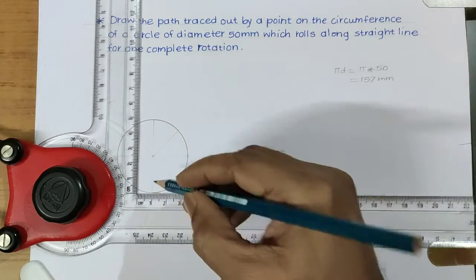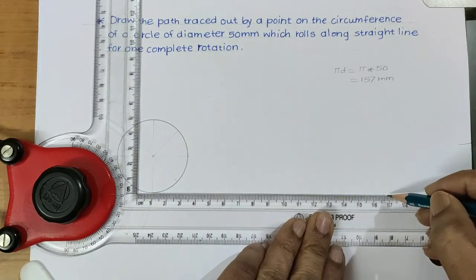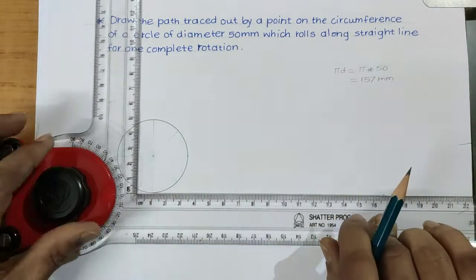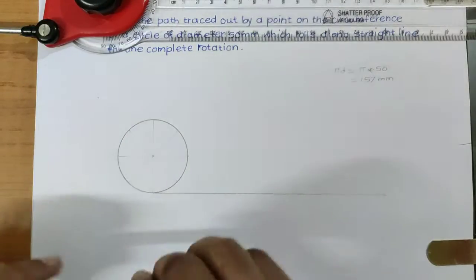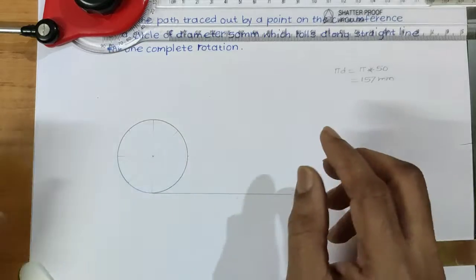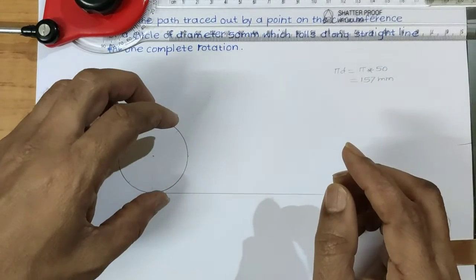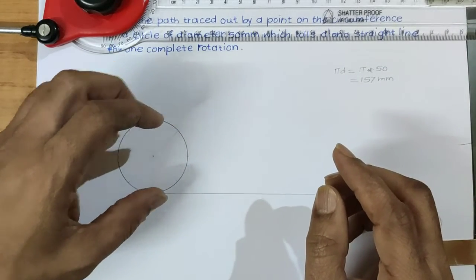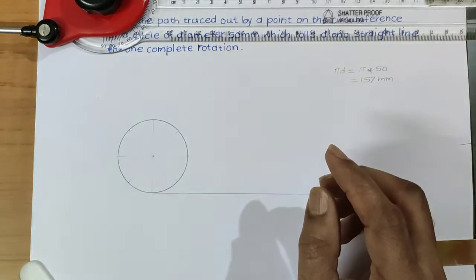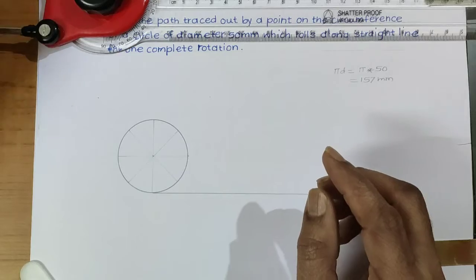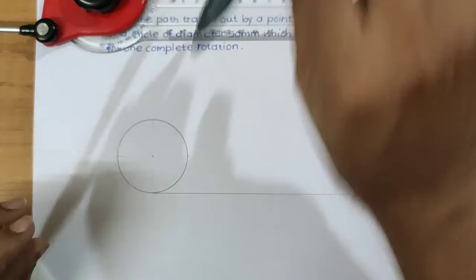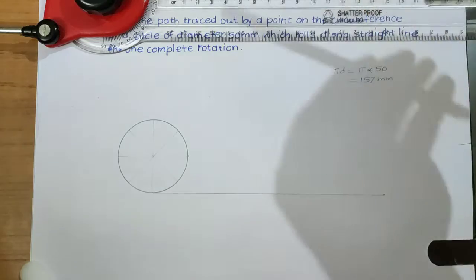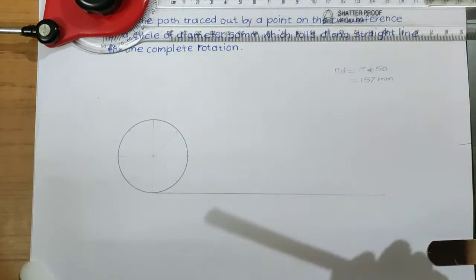I have started from 1, that is why I am taking 167 instead of 157. Now divide this line into the same number of equal parts as the total divisions of the circle, which is 8. Therefore divide this line segment into 8 equal parts by graphical method only.